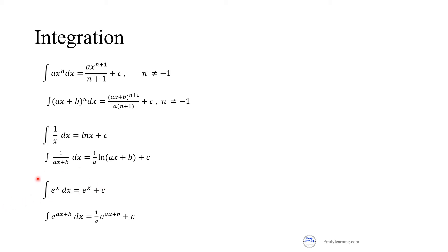When you differentiate e^x you get e^x, so when you integrate e^x you get e^x + c. If you integrate e^(ax+b) you get (1/a) e^(ax+b) + c. The power must be linear — strictly ax + b — meaning the power of x must be 1; otherwise you cannot use this formula.